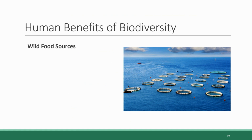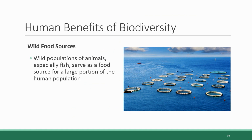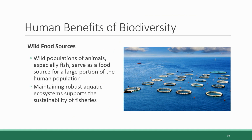The third and final major benefit of biodiversity is the provision of wild food sources from diverse ecosystems. We may think of our food as coming from farms or ranches that raise domesticated livestock, but wild populations of fish especially serve as a major food source for a large portion of the human population. Fish farms are also a source of fish, but about half of fish are still wild-caught. So maintaining robust aquatic ecosystems supports the sustainability of fisheries, such as this ocean fishery pictured here, and their role as a food source for humans.